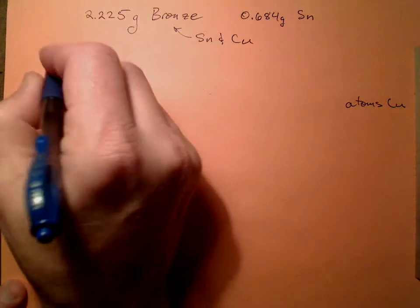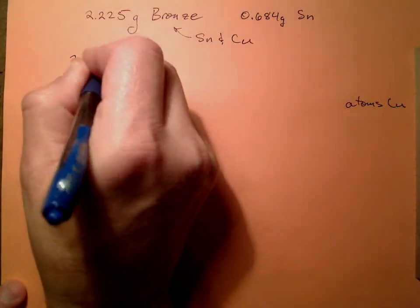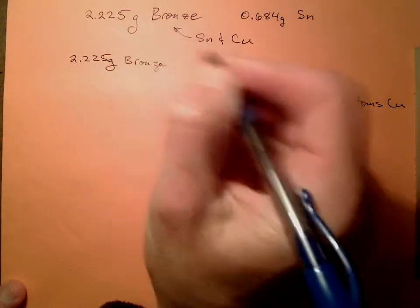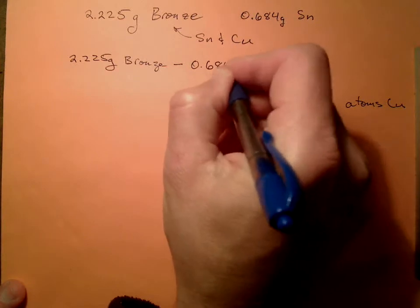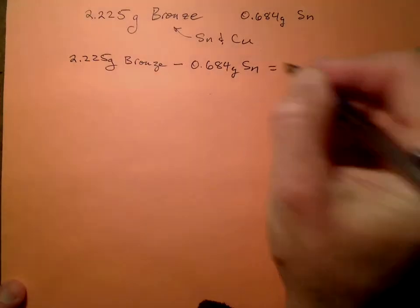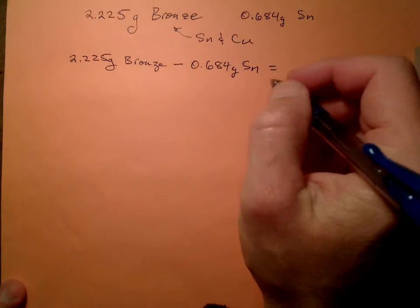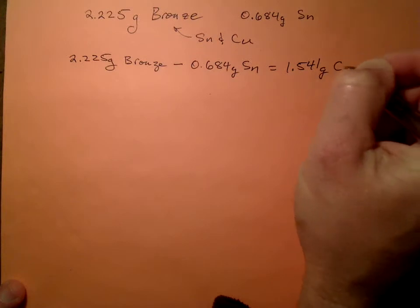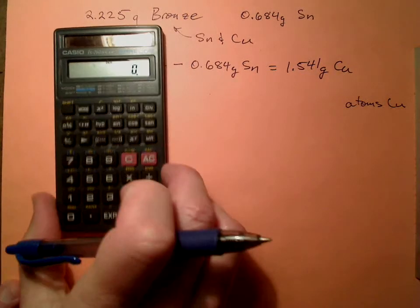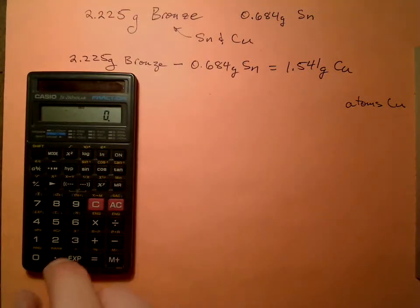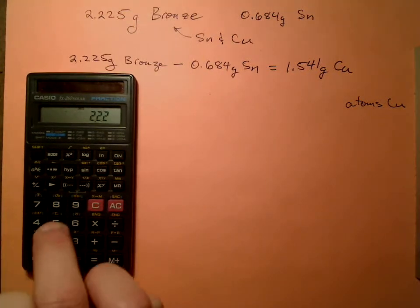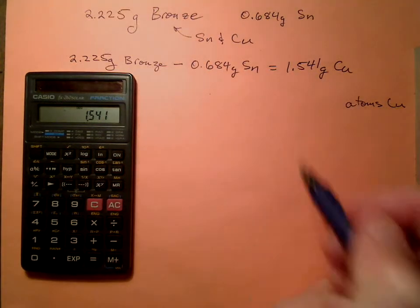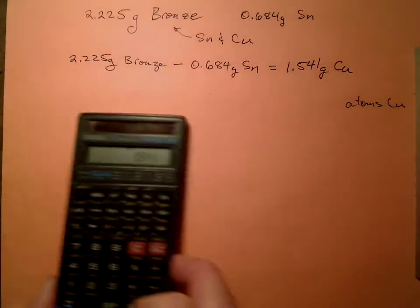So we need to figure out how many grams of copper. Well, if we have 2.225 grams of bronze and we subtract away 0.684 grams of tin, that's equal to the mass of copper. What is that? 1.541 grams of copper. Let's double check that.